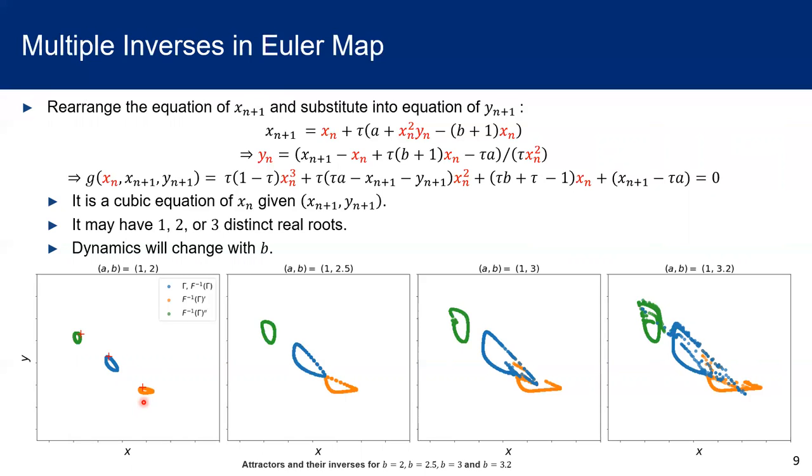Moreover, when we travel through all points of the attractor, the locus on the left and the locus on the right, we can also form a closed loop respectively, shown in green and orange in these figures.